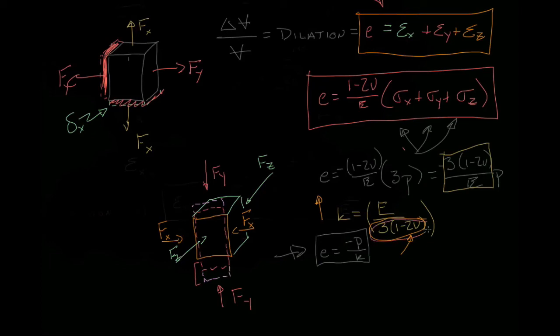So we can see that if the Poisson ratio is one-half, we're going to end up with a material that no matter what the Young's modulus is, it is not going to experience any dilation when it's submerged in a fluid.